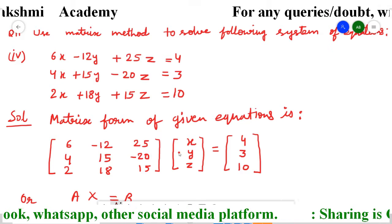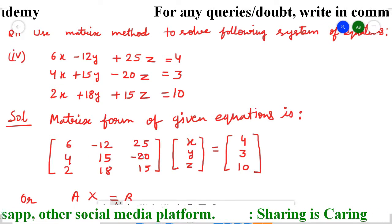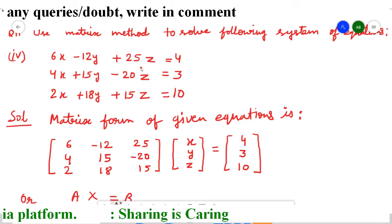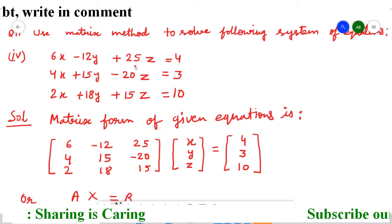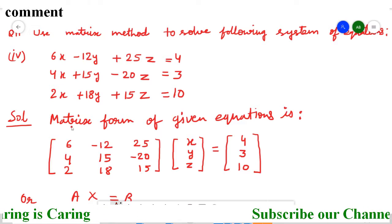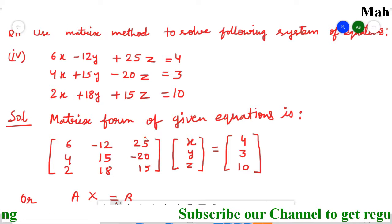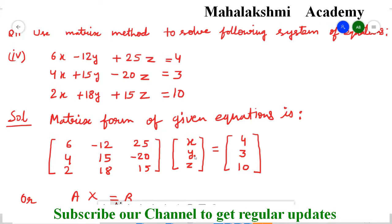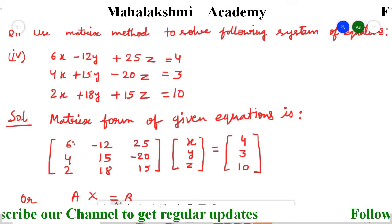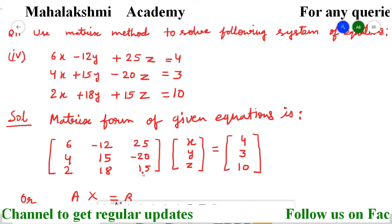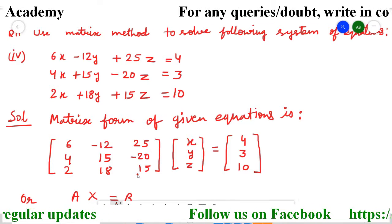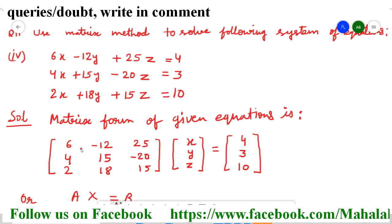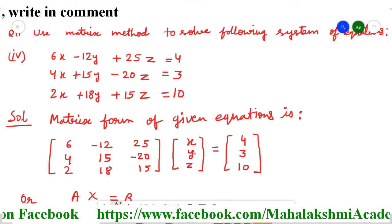So these coefficients are entered here and it forms a square matrix of order 3, and there is also a column matrix. In this column matrix, whatever variables are used in the equations — x, y, z — since we wrote the first column for x, second for y, and third for z coefficients, the same order is maintained in the column matrix also. The variables come in proper order: first x, then y, then z.